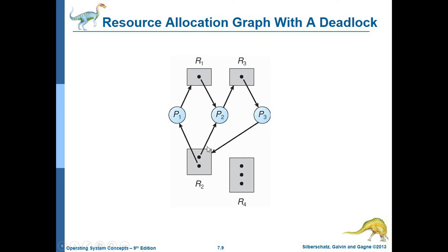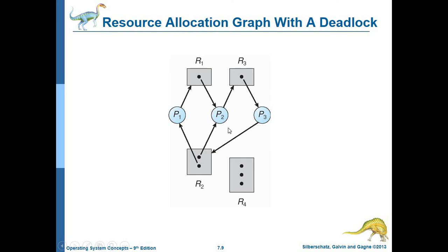R1 or R2 instance assigns to R3 instance. P3 can be changed at the same time. P3 is assigned to R3 instance, but the instance will complete the R2 instance, but that instance has P1 and P2, so that will create a deadlock. The loop indicates that there is a deadlock.